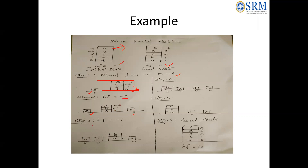In step 3, C is at the top and is empty, so the arm brings C down to the table. Now A, C, and E are all on the table. The remaining stack has B and D with values -1 and 0. The heuristic function has now reduced to -1.